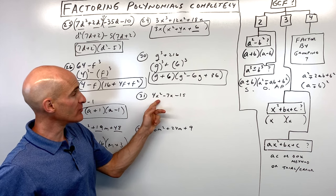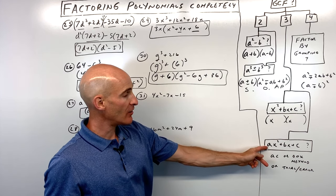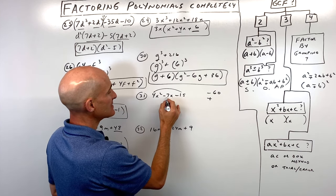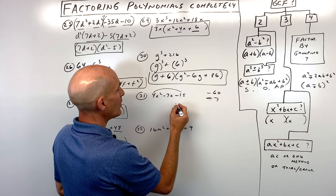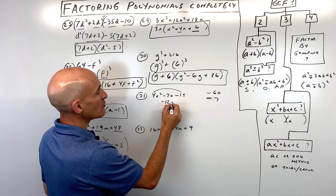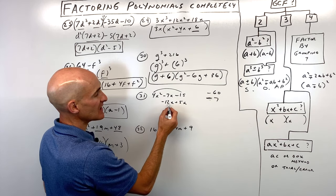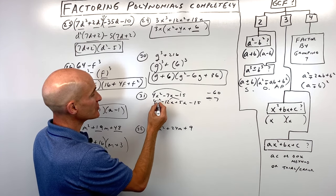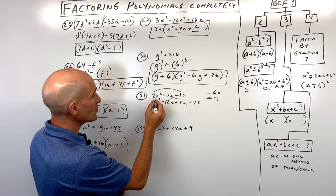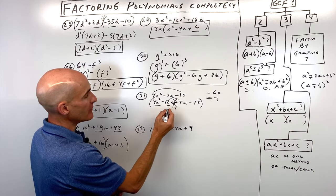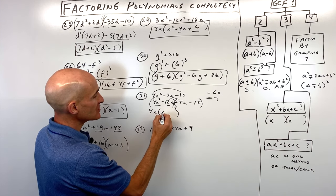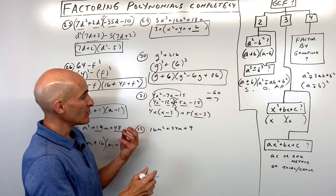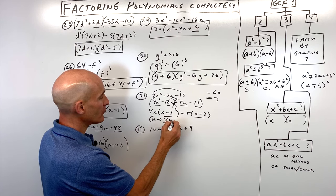Number thirty-one is a trinomial, no greatest common factor, leading coefficient not 1. Using the AC method: what multiplies to negative 60 but adds to negative 7? That's negative 12 and positive 5. Split the middle term into negative 12x and positive 5x, bring down the first and last terms to get four terms. Factoring by grouping: factor out 4x from the first pair, giving x minus 3. Factor out 5 from the second pair, also giving x minus 3. Factor out x minus 3 to get x minus 3 times 4x plus 5.